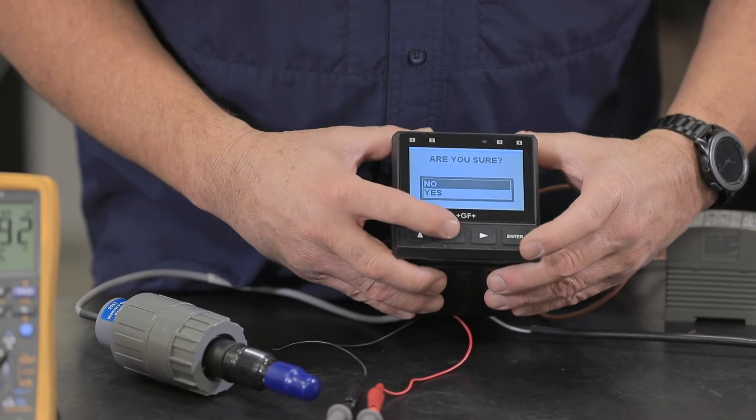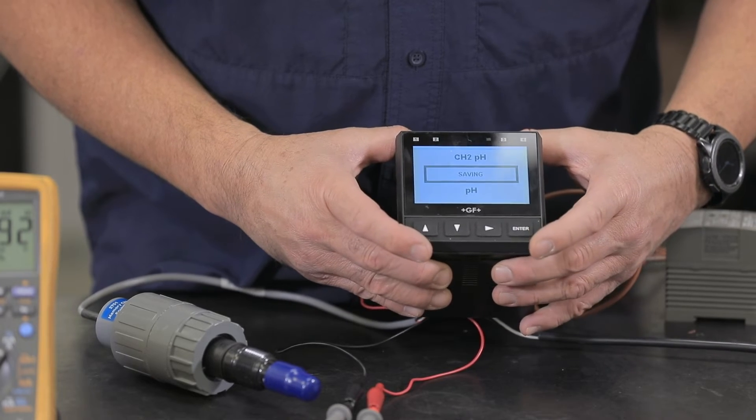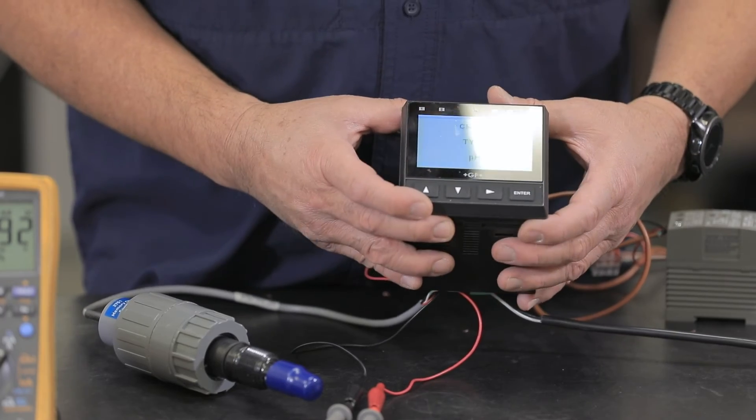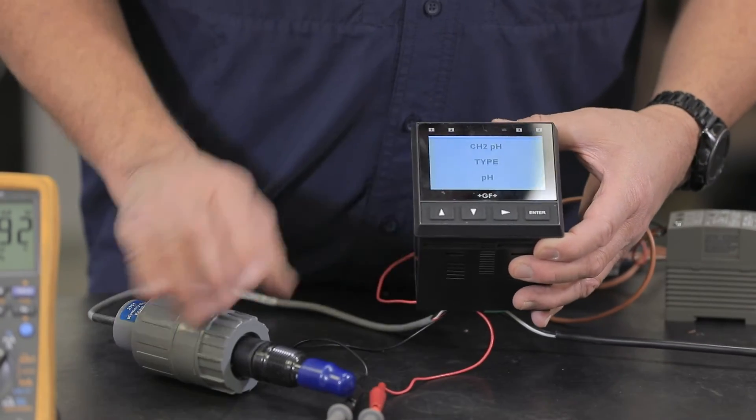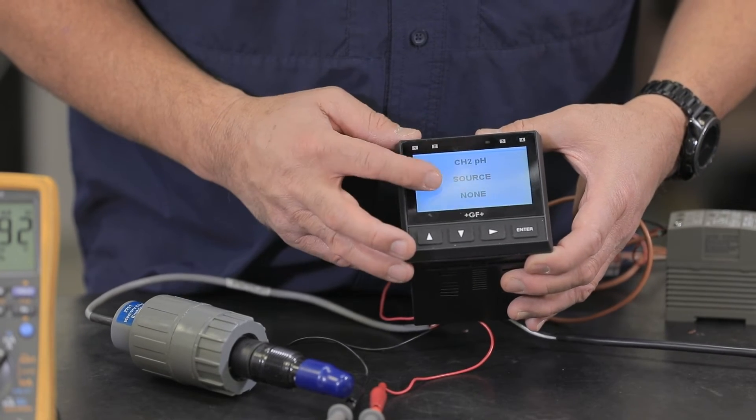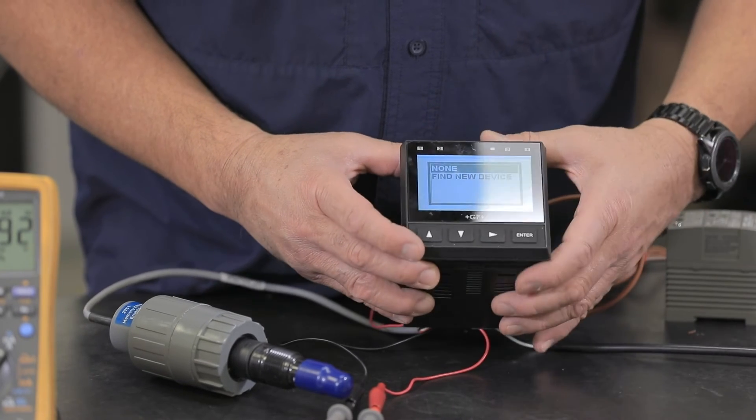Are you sure? Yes. Okay. Being that this is the 9950-11, this is a six channel, so we need to tell it to look for a pH sensor. So we're going to scroll down and it says channel two pH source none, and here we're going to hit the right arrow and we're going to tell it find new device.